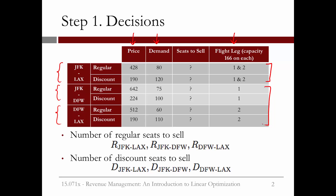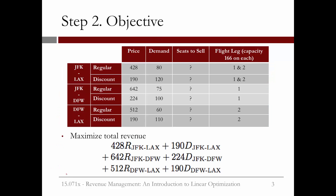So what are our decisions now? They're the number of regular tickets to sell for each type, and the number of discount tickets to sell for each type. So in total, we have six decisions to make. Now let's define our objective. Like before, it's to maximize the total revenue. This is the sum of the price of the ticket times the number of seats of that type we sell, for each type of ticket.